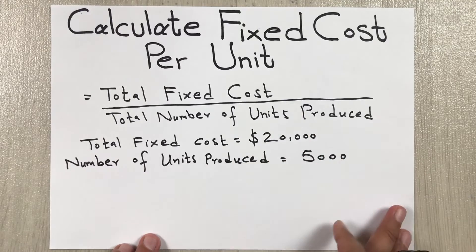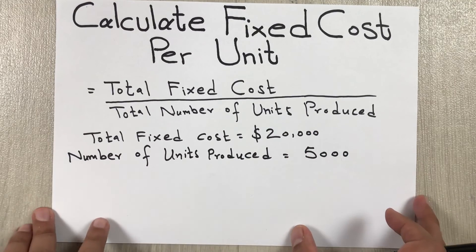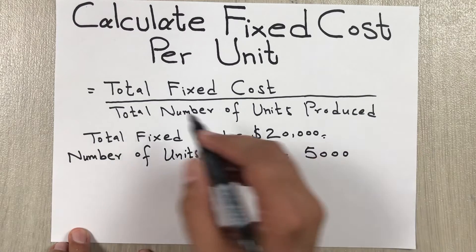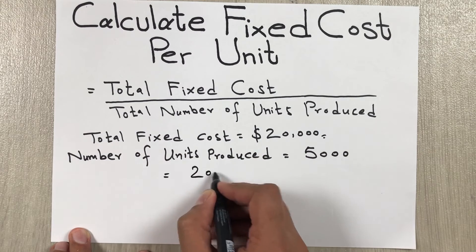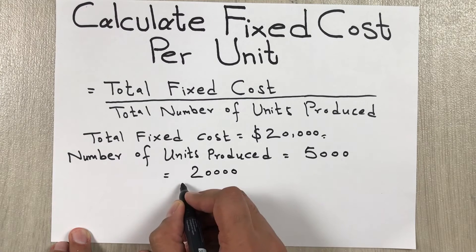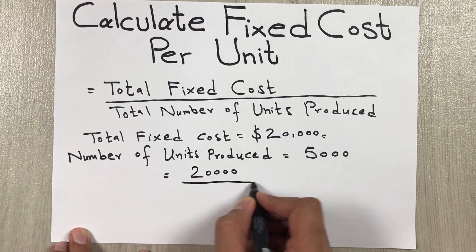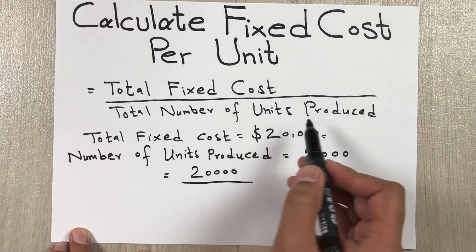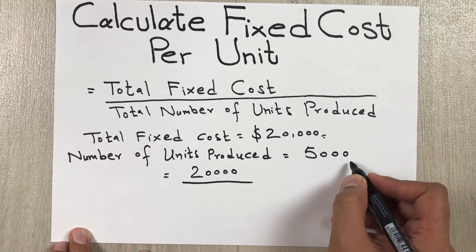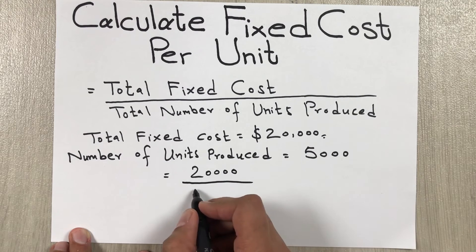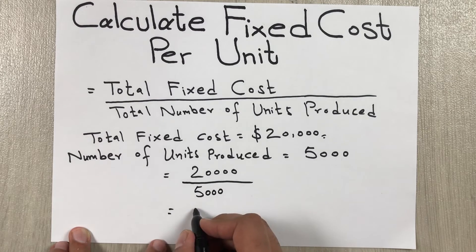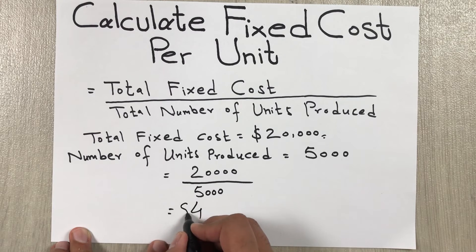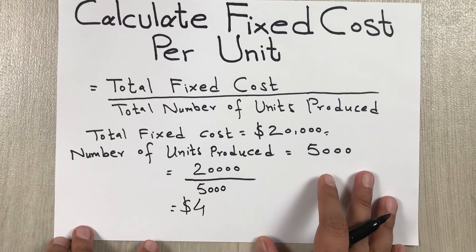We put the values into the formula: total fixed cost is twenty thousand, divided by total number of units produced, which is five thousand. When we do this calculation, we get our answer, which is four dollars.